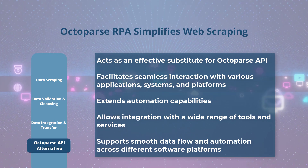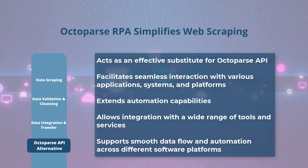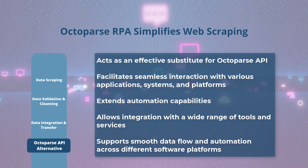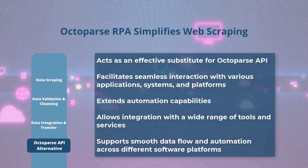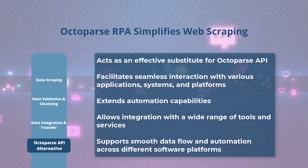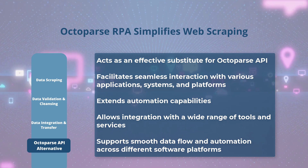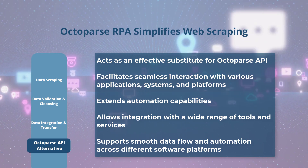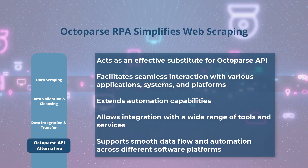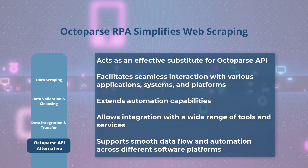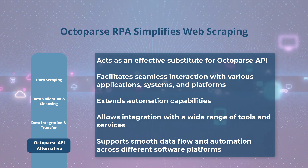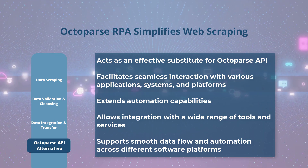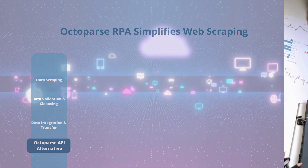Octoparse API alternative: It serves as a powerful alternative to the Octoparse API, allowing you to connect and interact with various applications, systems, and platforms — extending automation capabilities beyond web scraping. You can integrate Octoparse RPA with other tools and services, enabling smooth data flow and automation across different software environments.